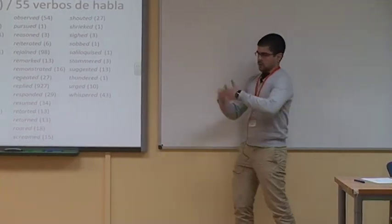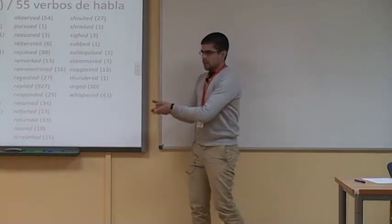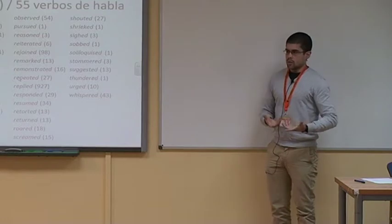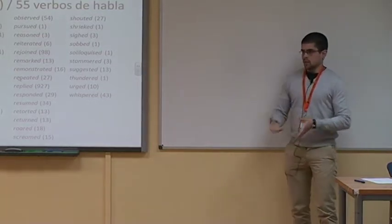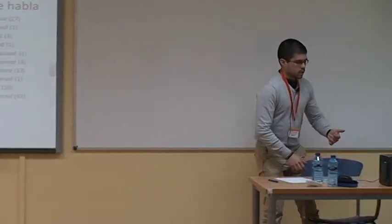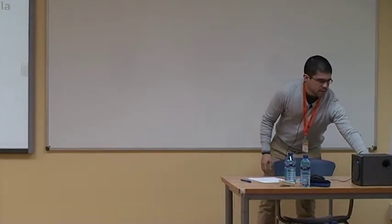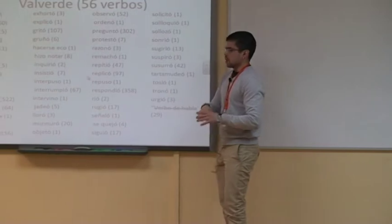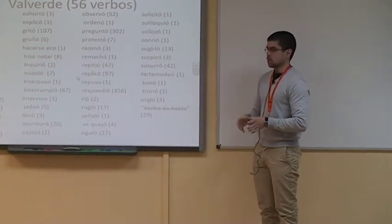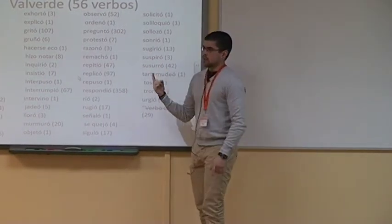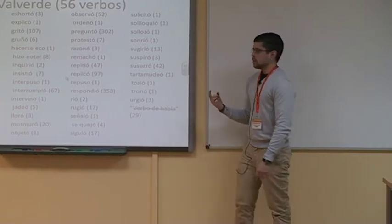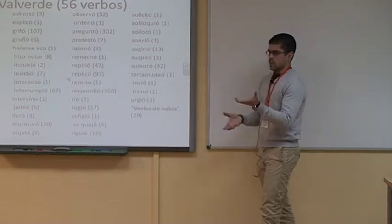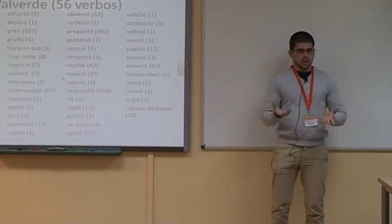Gracias a WorldSmith o a cualquier otro programa de concordancias, es posible extraer automáticamente todos los verbos y luego —que es la parte más engorrosa— anotar manualmente las traducciones españolas, obteniendo resultados interesantes. En el caso de Valverde, los 2.168 verbos divididos en 55 verbos distintos corresponden a que Valverde utiliza uno más, 56. Luego habrá que analizar si la traducción es fiel o no, pero en principio se corresponde más o menos con el original.